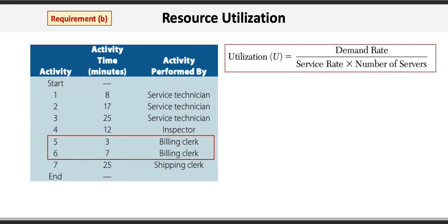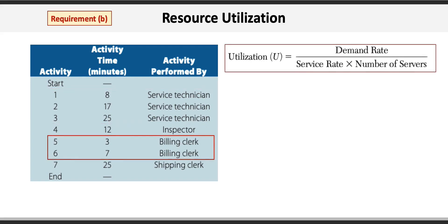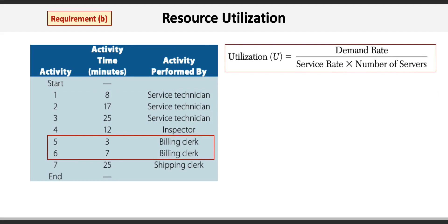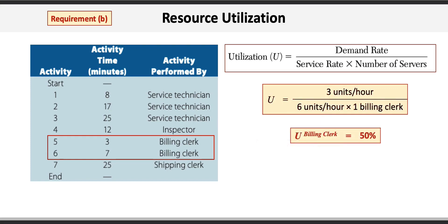Requirement B asks for the utilization of the billing clerk. For this we use the formula where utilization U is equal to the demand rate divided by the service rate times the number of servers. The demand rate is 3 units per hour and the service rate is 60 minutes per hour divided by 10 minutes — that's 7 plus 3 for activity time — giving 6 units per hour, multiplied by 1 billing clerk. The result is 3 divided by 6, giving us 50% utilization for the billing clerk.